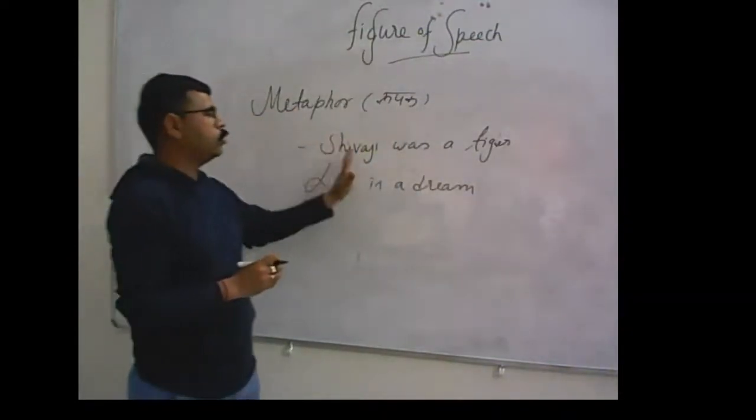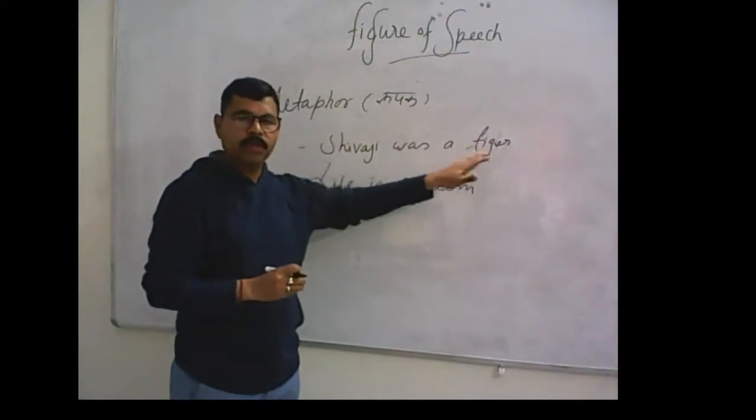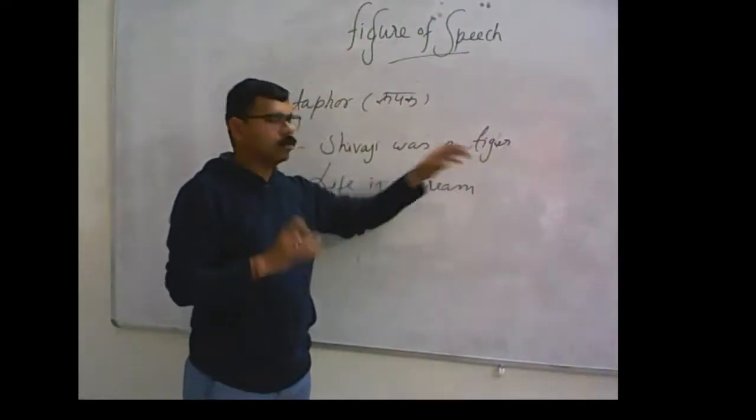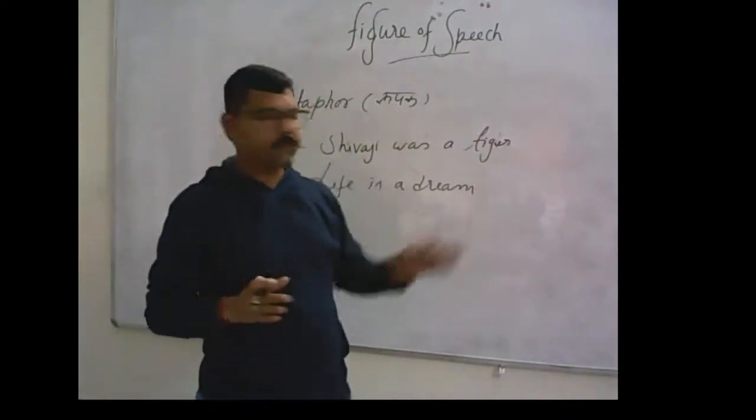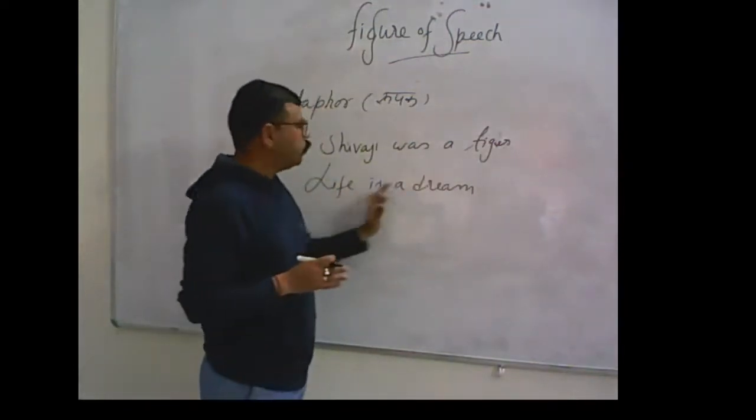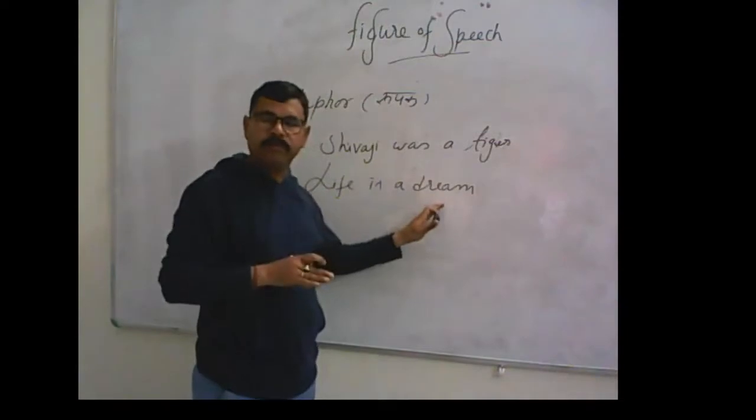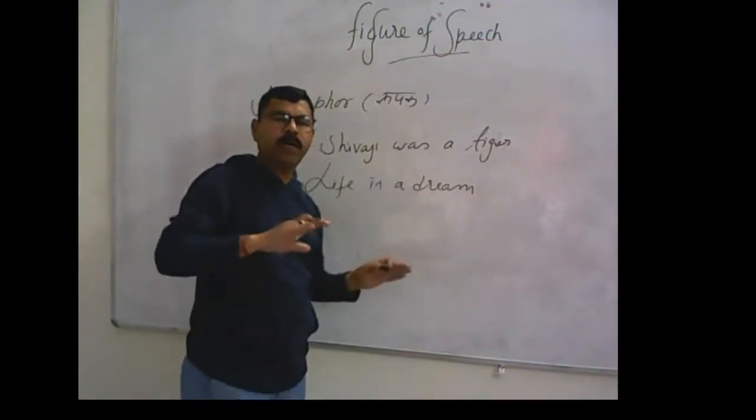For example, Shivaji was a tiger. Life is a dream. Here we consider that Shivaji was a tiger. Tiger denotes courageousness and boldness.